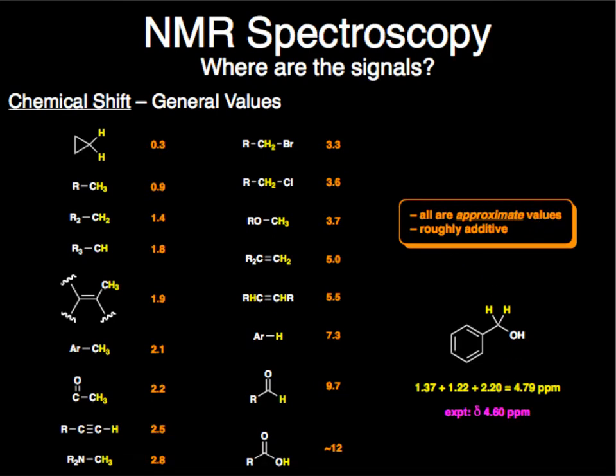But again, you'll see these things. These are all approximate and they're all roughly additive. So if you're benzylic and you're next to an OH, you can kind of start to add up the points. And there's really nice software in ChemDraw and MNova actually to help you predict where things would be at as well.